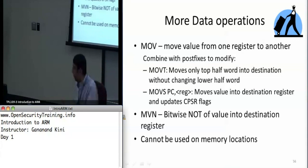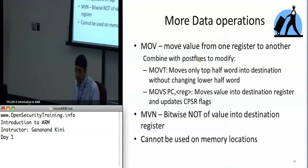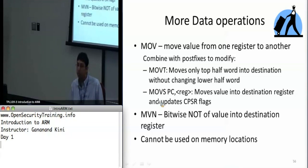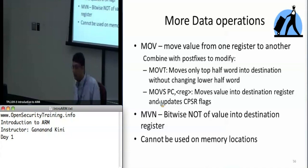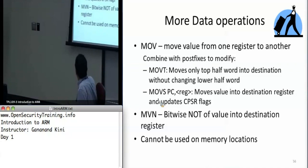There are variations on MOV. One of them is MOVT, which moves the top half-word of the 32-bit value into the destination register. Then there is MOVS PC. This is a special instruction because you're changing the program counter — you're telling it to do a branch at this point. You're actually taking an instruction address, loading it into the PC, and telling it to branch to that instruction.